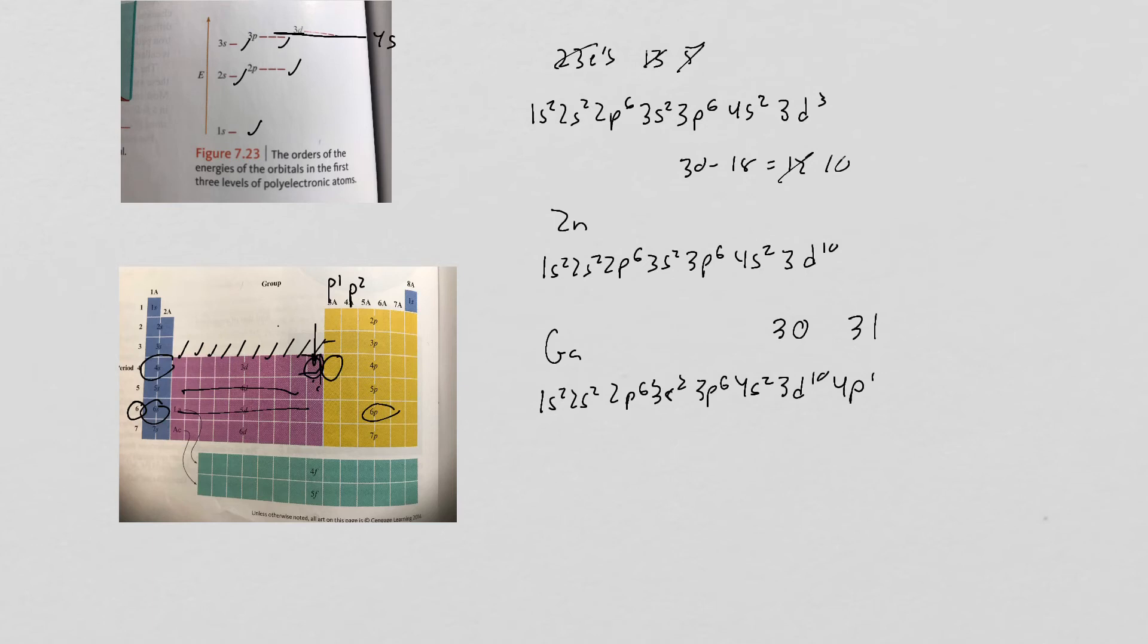So just to talk about the general pattern here: I do 1s first, then 2s, then 2p, then 3s, then 3p, then 4s, then 3d, then 4p, then 5s, and 4d, and 5p, 6s. Now here's the weird thing. After 6s, we do this row. See, the problem is the periodic table would be way too long, because these two rows here go into this space right in here.